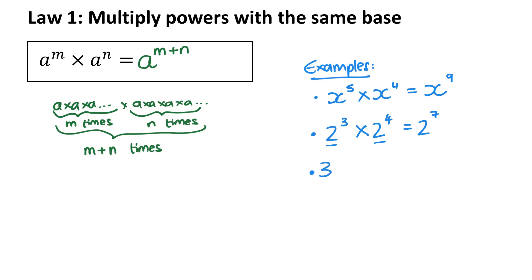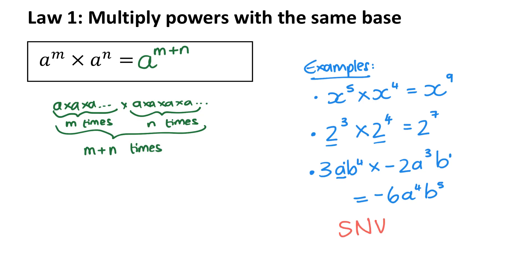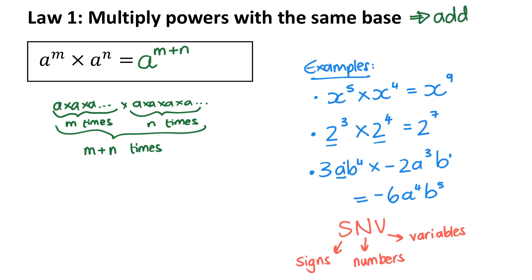The last example is a bit of a mixed one: 3ab to the power of 4 times negative 2a cubed b. I'm multiplying a negative by a positive, so it will be negative. 3 times 2 is 6. For the a's, if I don't have an exponent the exponent is 1, so a times a to the power of 3 will be a to the power of 4. And b to the power of 4 times b to the power of 1 is b to the power of 5. It may be helpful to remember S, M, V: first decide on the signs, then multiply the numbers or constants, and lastly multiply the variables. When you multiply powers with the same base, you add the exponents.